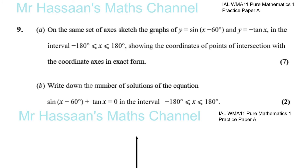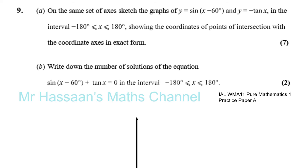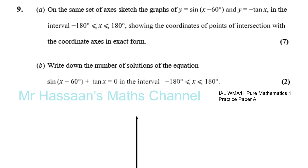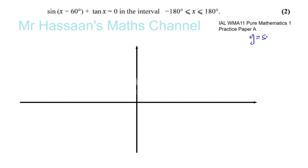So first of all, we need to draw y equals sine(x minus 60) and y equals minus tan x. I'll start with negative tan x.